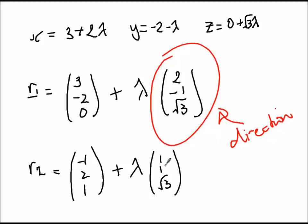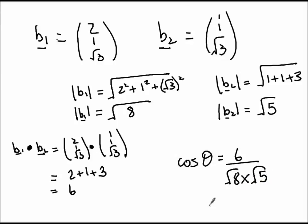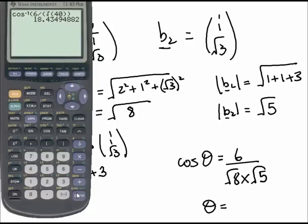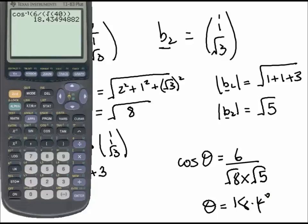The second line should have a direction of 1, 1, root 3. I'm going to write those two directions as B1 and B2. I need to find the length of each vector and then the dot product between the two. The length of the first is root 8, the second is root 5, and the dot product is 6. So the cosine of the angle is 6 over root 8 times root 5. Remember, we need the acute angle. Typing that into the calculator — with my calculator in degree mode — I get an angle of 18.4 degrees.